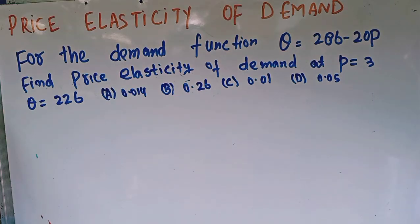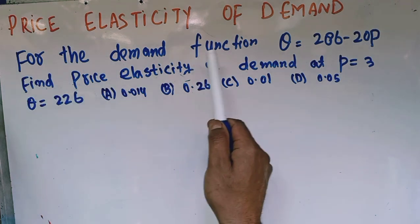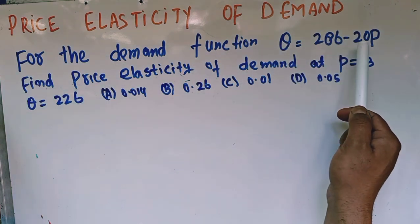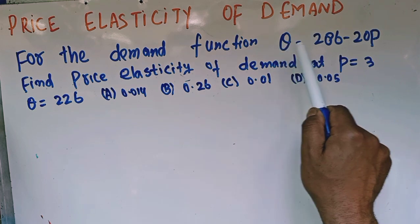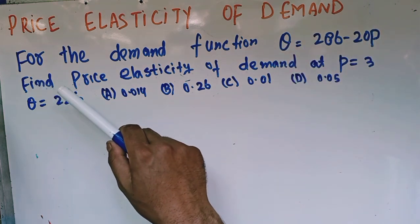In this video we will solve a question on price elasticity of demand. The question is for the demand function Q equals 286 minus 20P, where Q is the quantity demanded and P is the price.